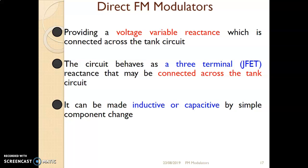The tank circuit provides the rest frequency for the FM modulator. When you change whatever capacitance or reactance is connected, the rest frequency of the oscillator changes. The circuit behaves like a three-terminal reactance connected across the tank circuit, and for this three-terminal device we use a JFET — hence this method is called the JFET reactance modulator.